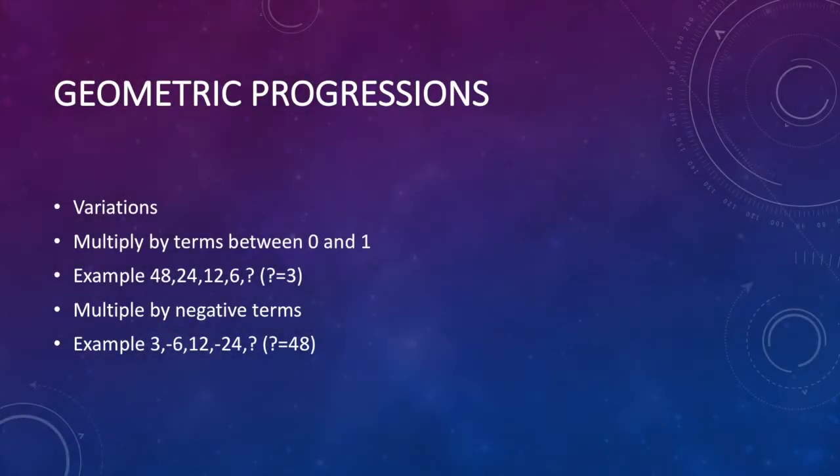There are two important variations that can occur. One is when the fixed number is between 0 and 1. For example, 48, 24, 12, 6 question mark, and question mark equals 3. In this case, each term is multiplied by a half to get the next term.